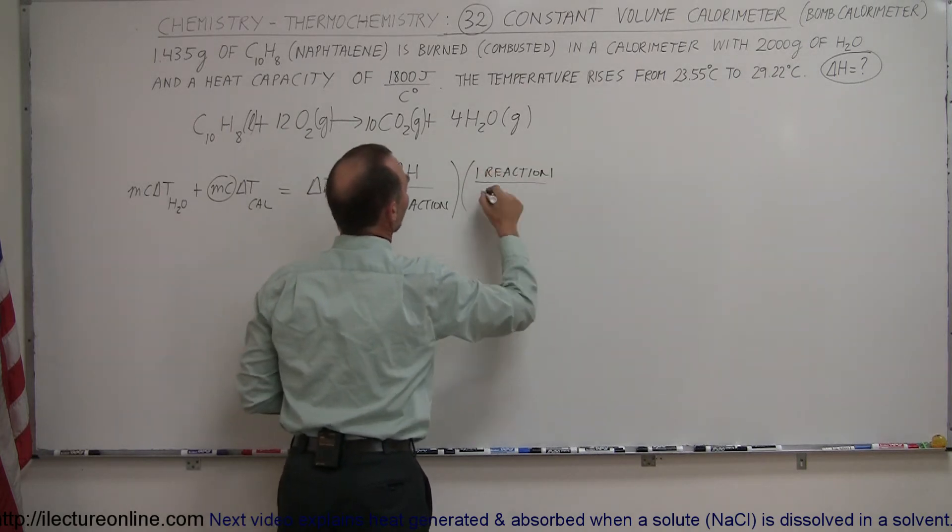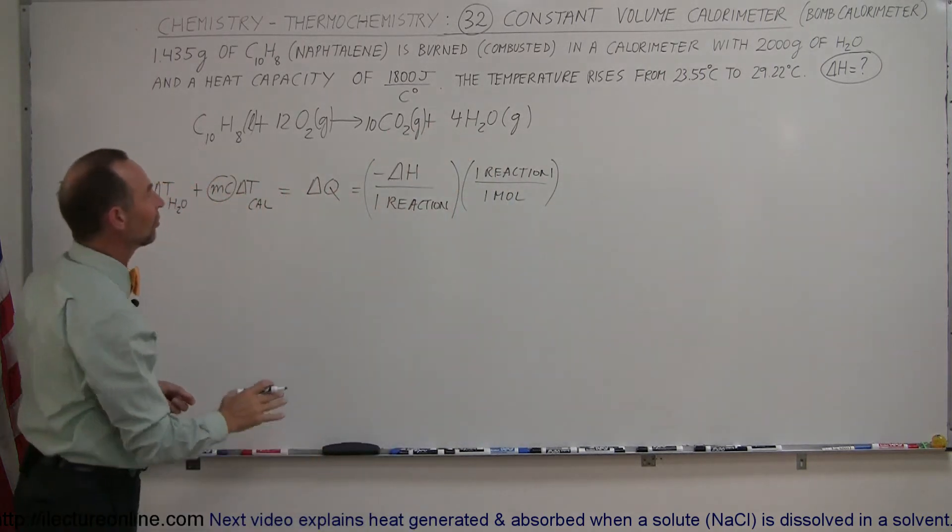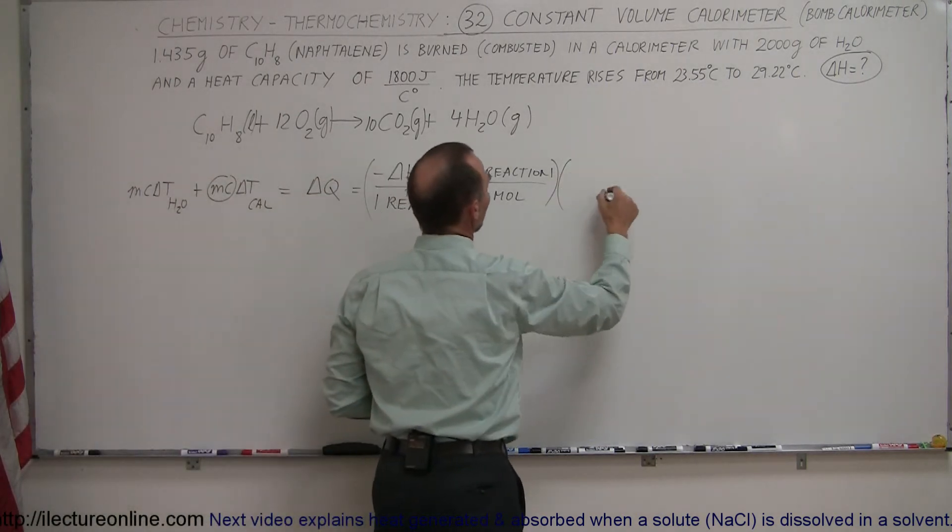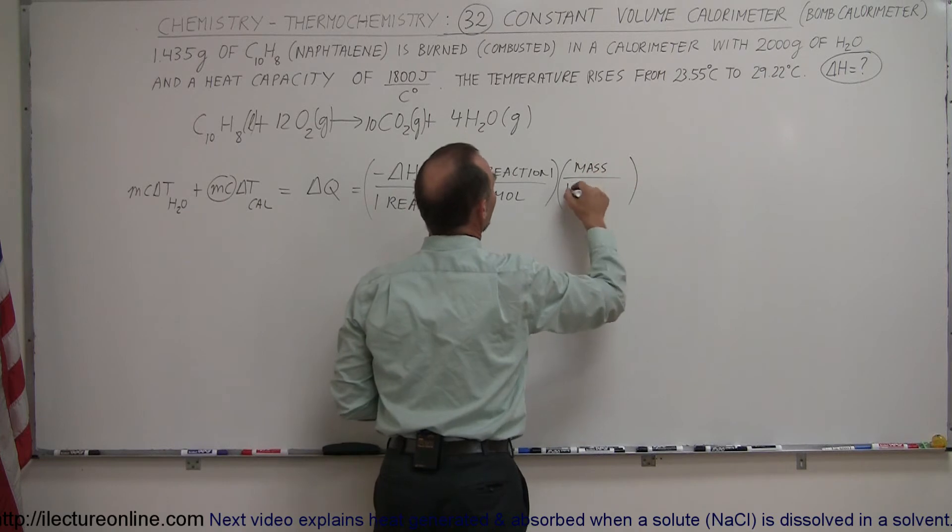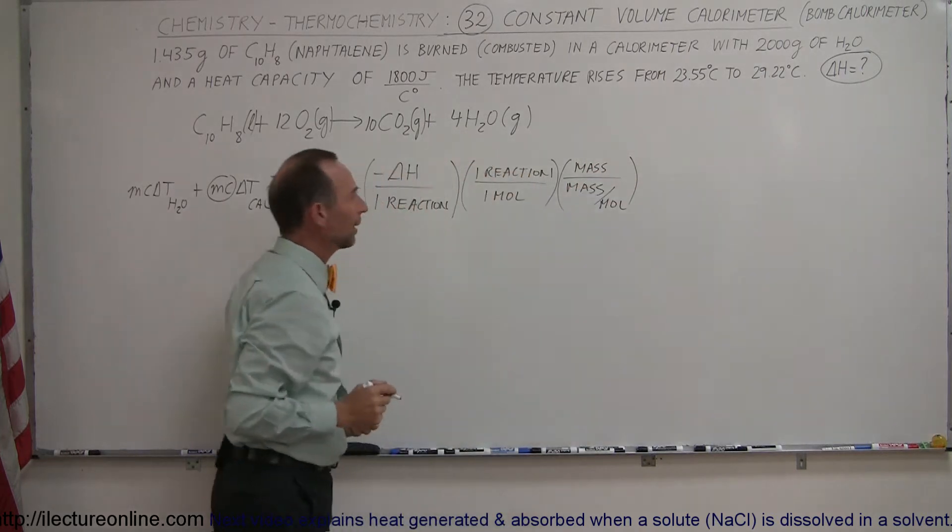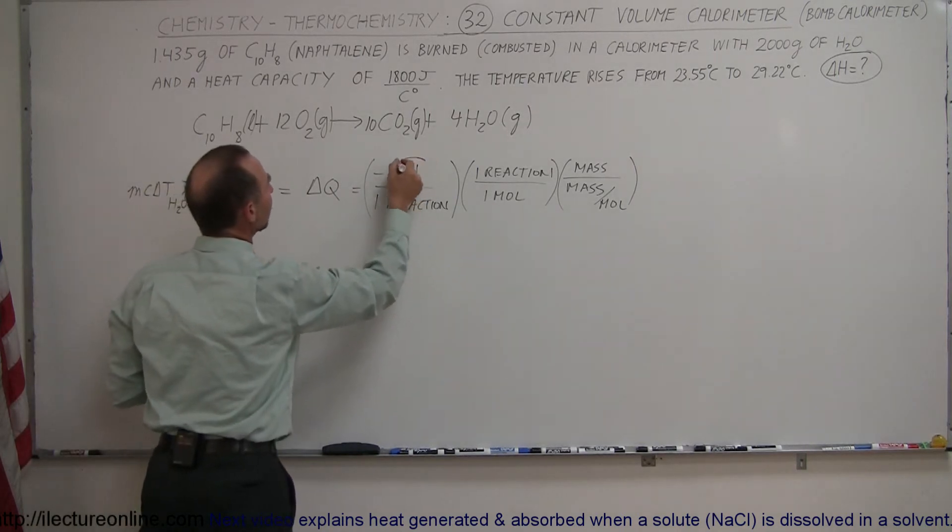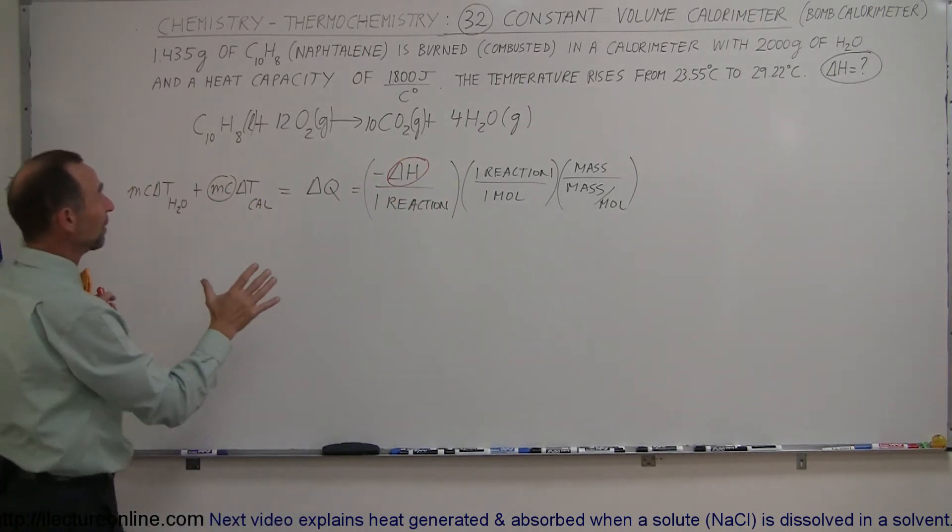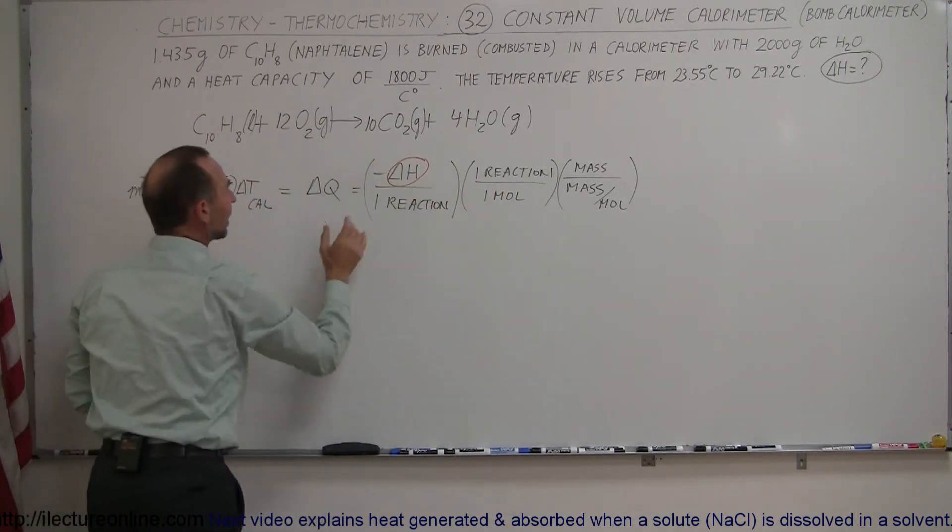Then we need to have the number of moles per reaction. So one reaction, we have one mole because the way the equation is written, this is the molar quantity of the reaction. Then we're going to multiply this times the mass divided by the mass per mole. We're looking for the enthalpy change, delta H. So what we're going to do with this equation is move everything else on the right side over to the left side so we can isolate delta H.